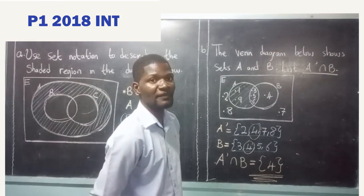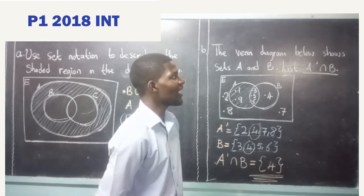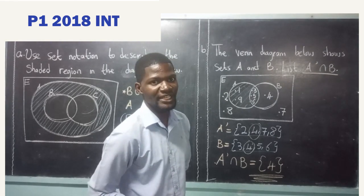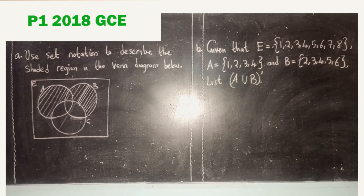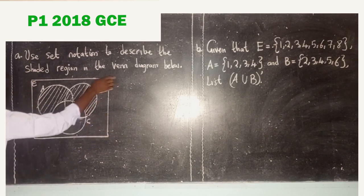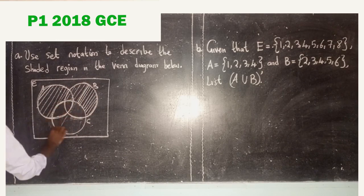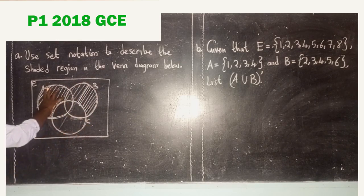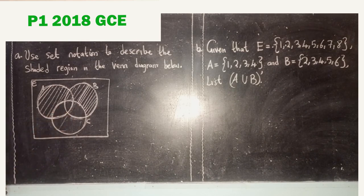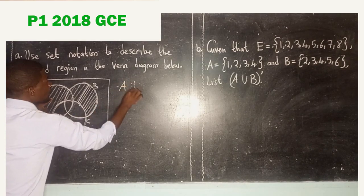Let's now move on to answering the second part of our questions — the SETS paper 1 questions for 2018 GCE. Under GCE, the first question says: use SET notation to describe the shaded region in the Venn diagram below. We have another Venn diagram with three sets: A, B, and C. We can tell that part of A and part of B has been shaded, but the entire C has not been shaded in any way.